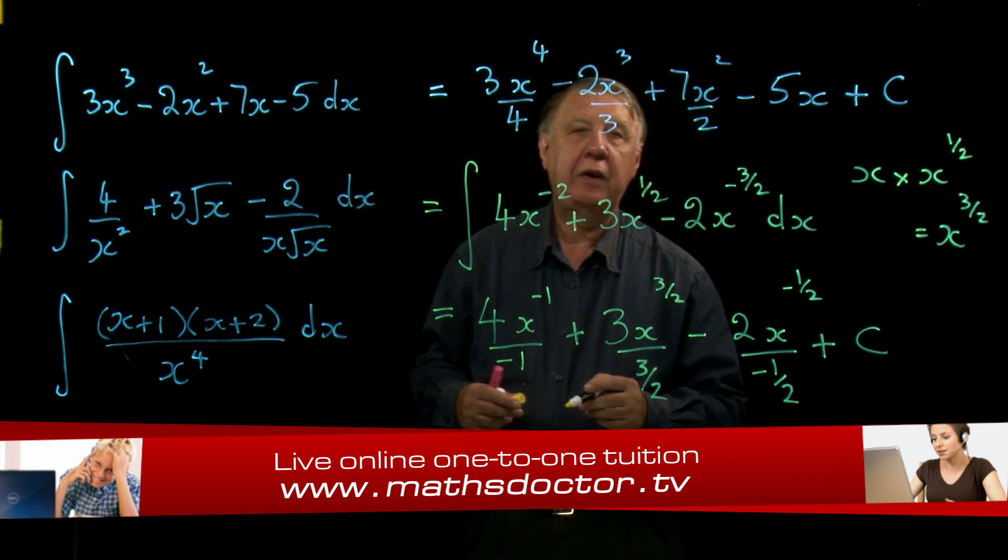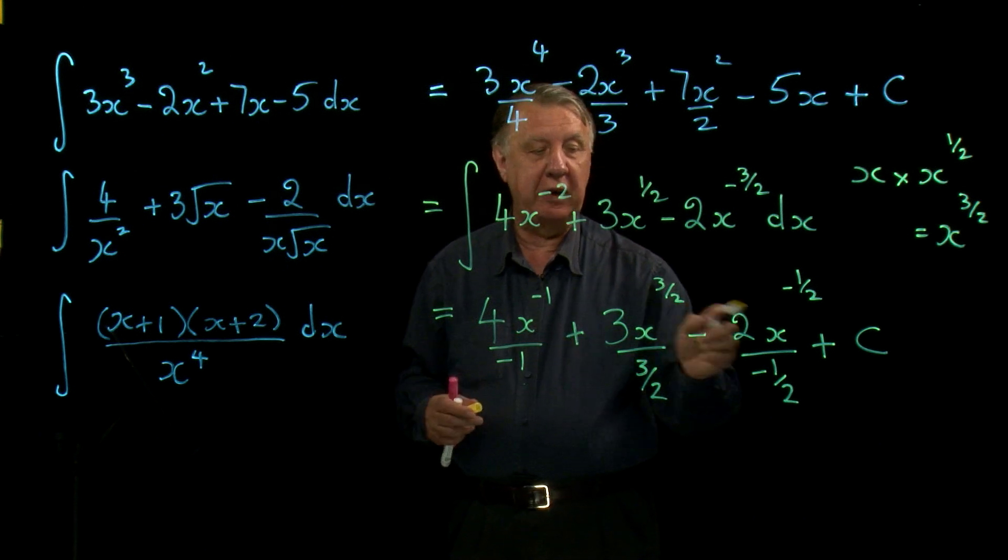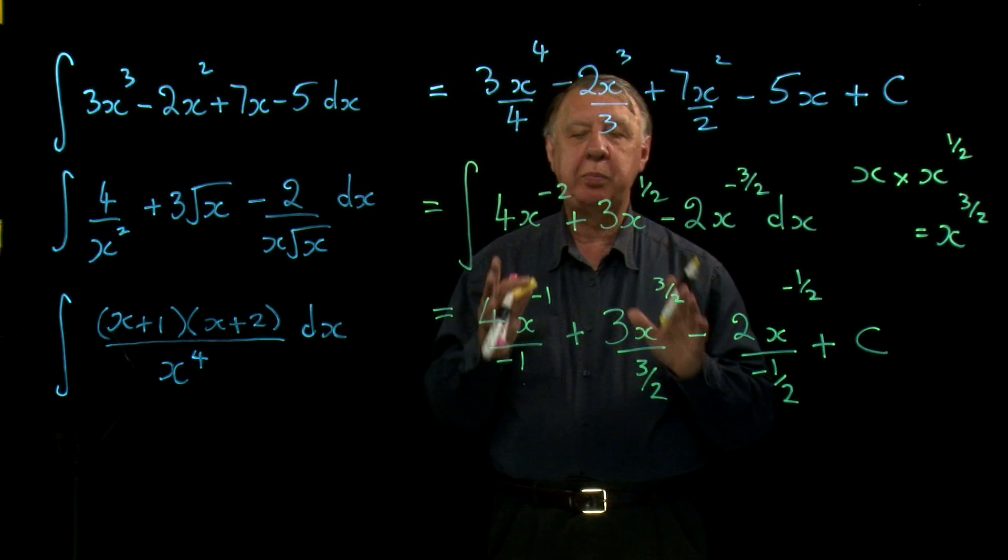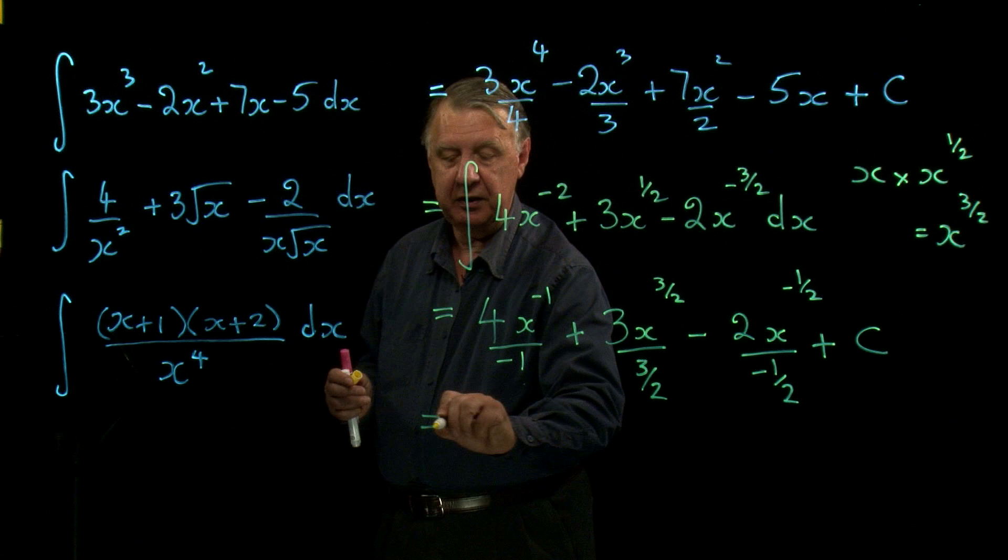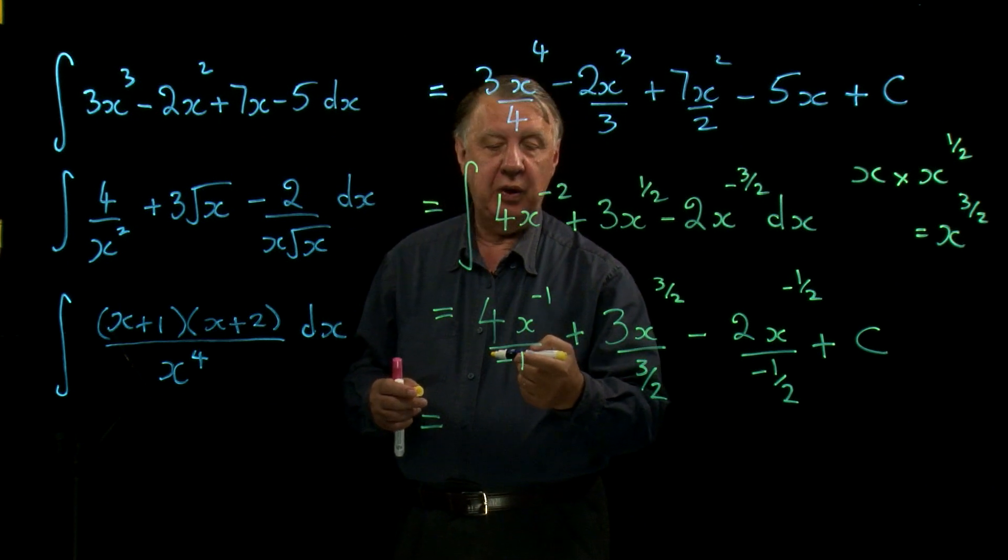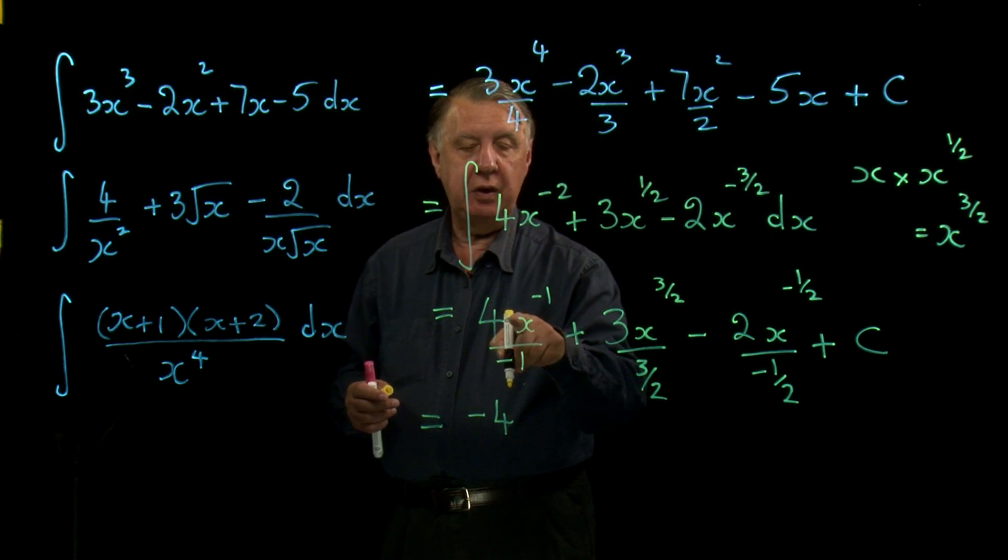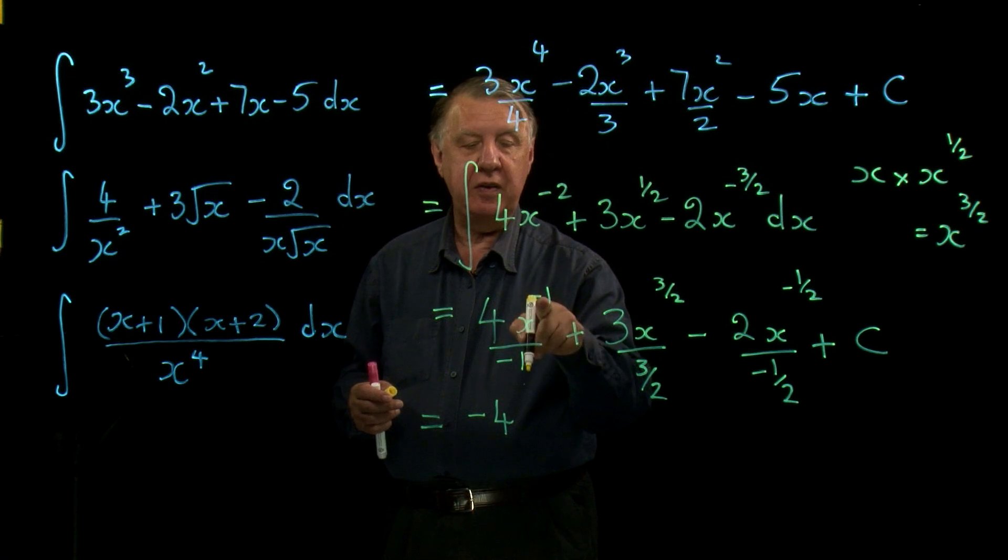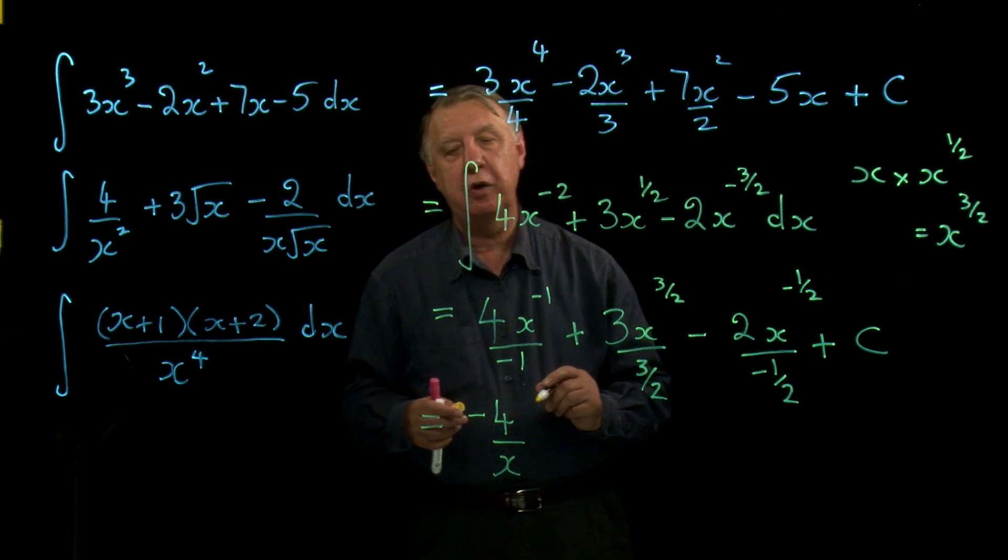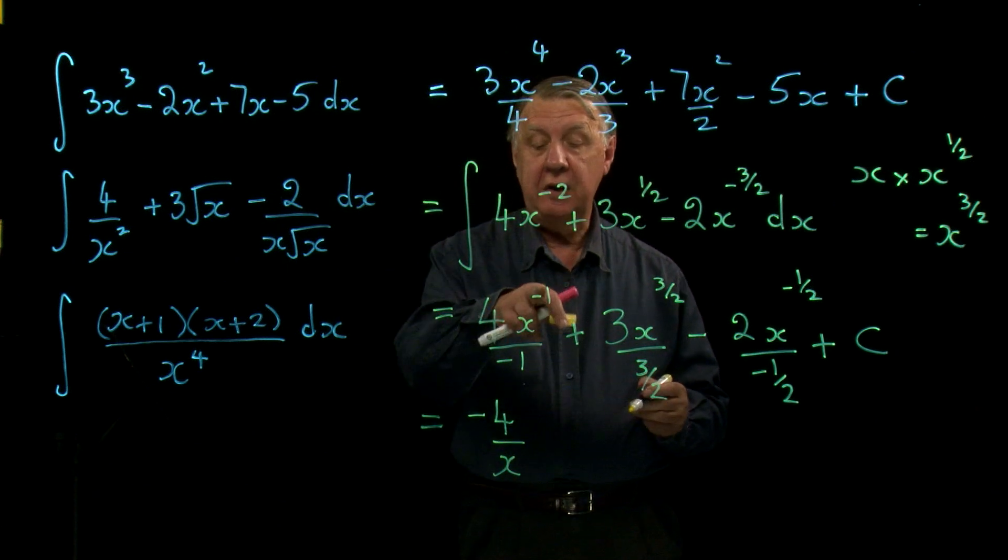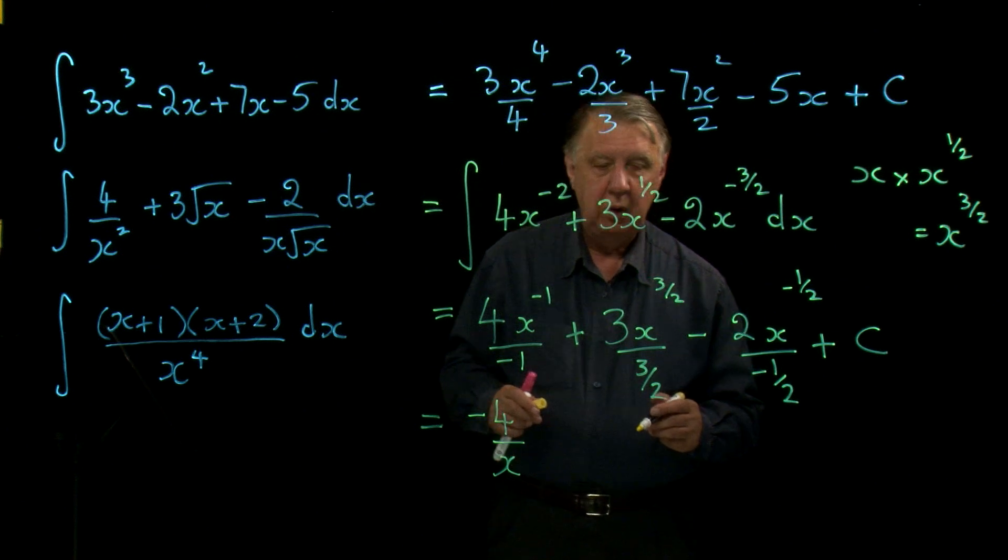That is the correct answer. But certainly you'll be asked to simplify your answer and you wouldn't get away with that. Now you've got to be confident and good with fractions, I'm afraid. There's no way around this. I'm dividing by negative 1. That's easy. That makes that negative 4. And it's multiplied by x to the negative 1, which is of course 1 over x. So the x goes on the bottom. Only the x. The negative power only belongs to x. 4 stays where it is.